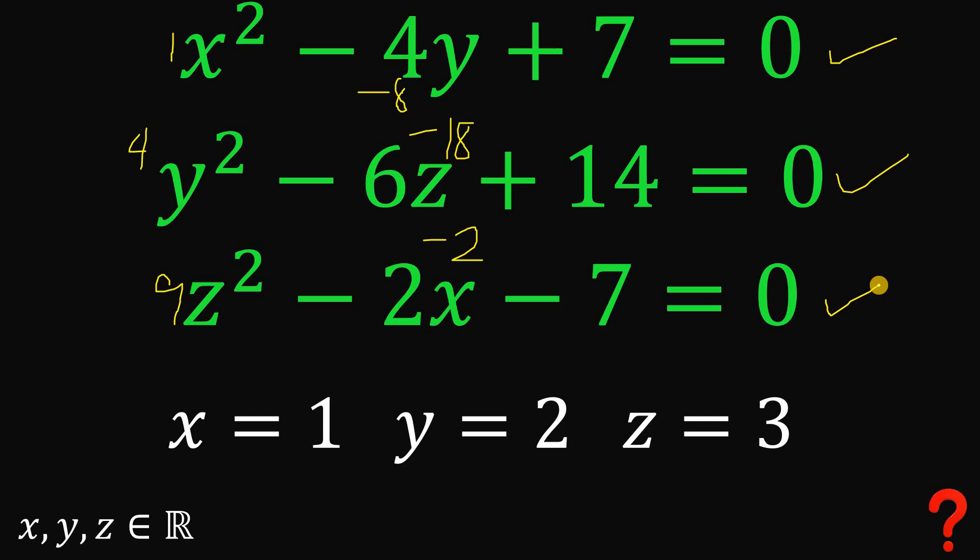Therefore, the answer to this question — the values of x, y, and z satisfying all three equations — is x equals 1, y equals 2, and z equals 3. And as always, we are done.